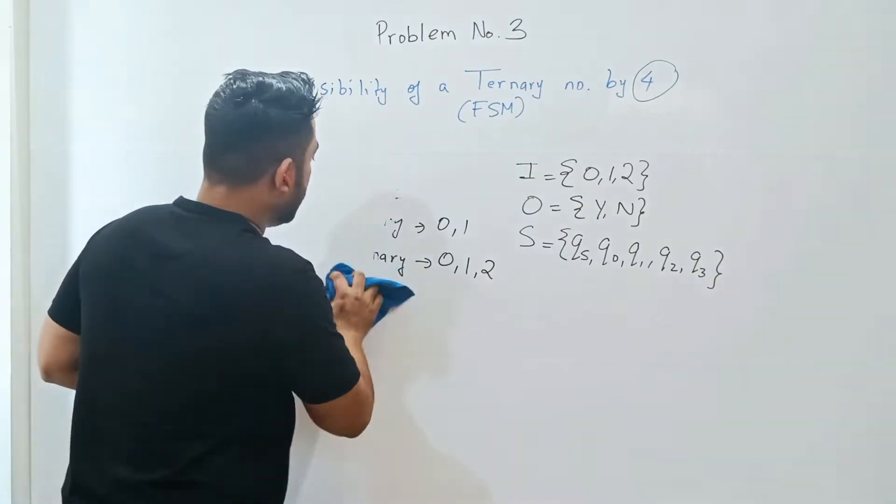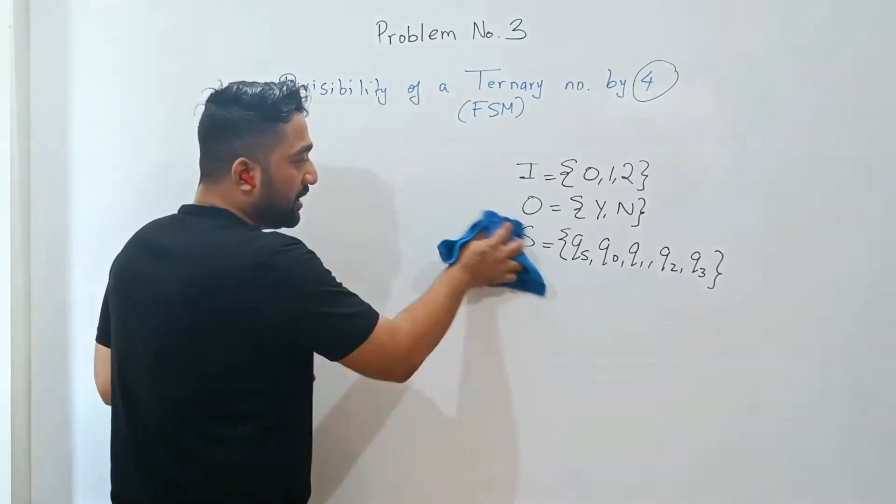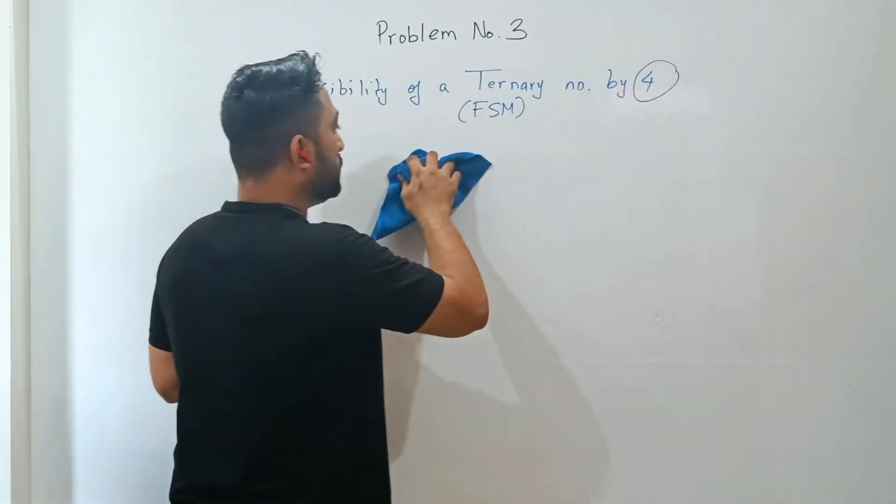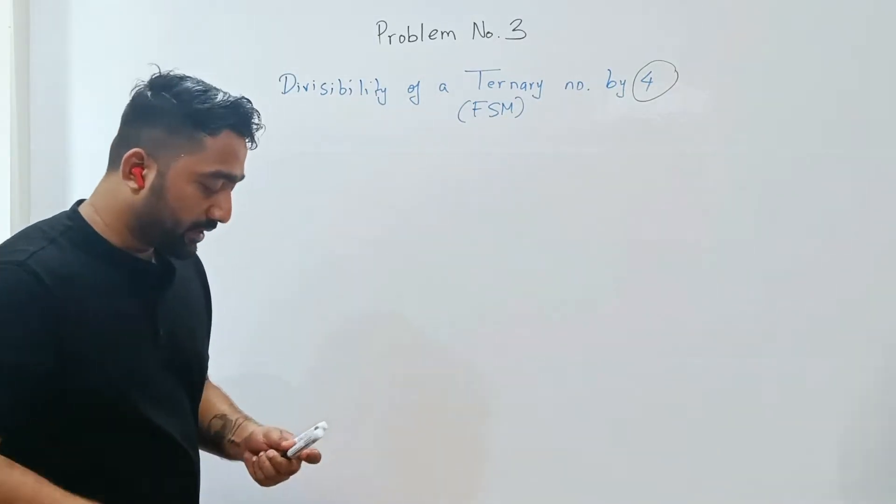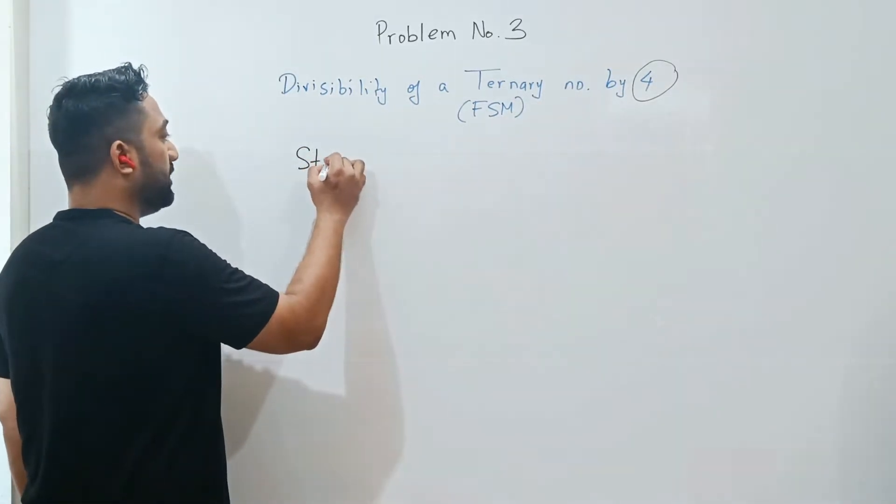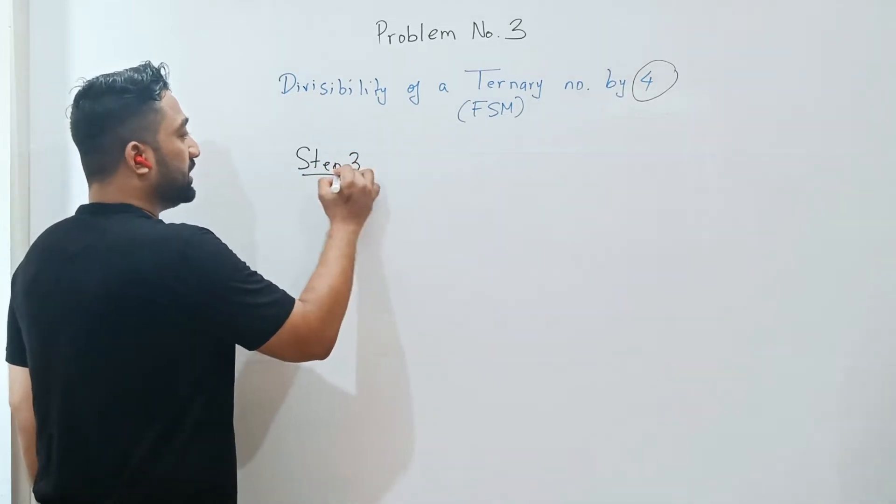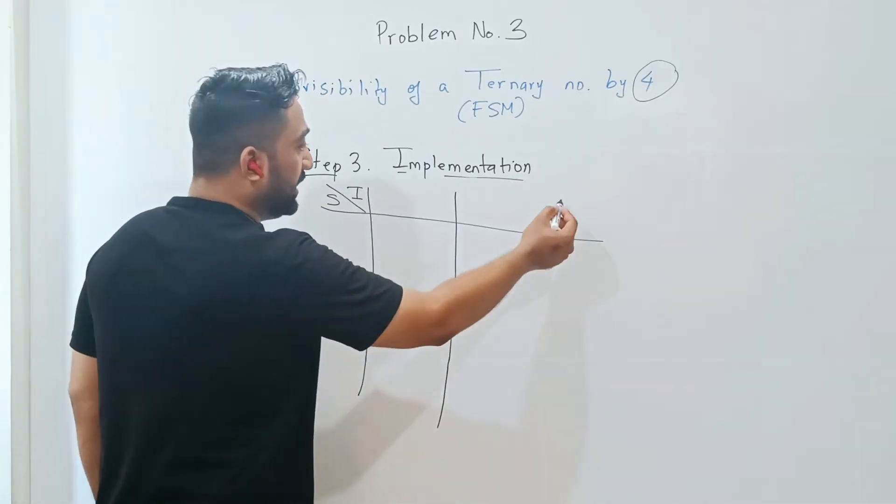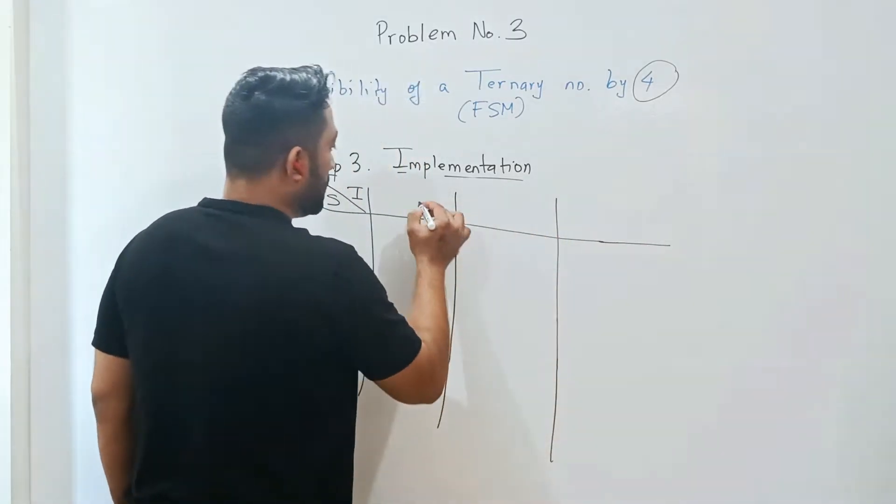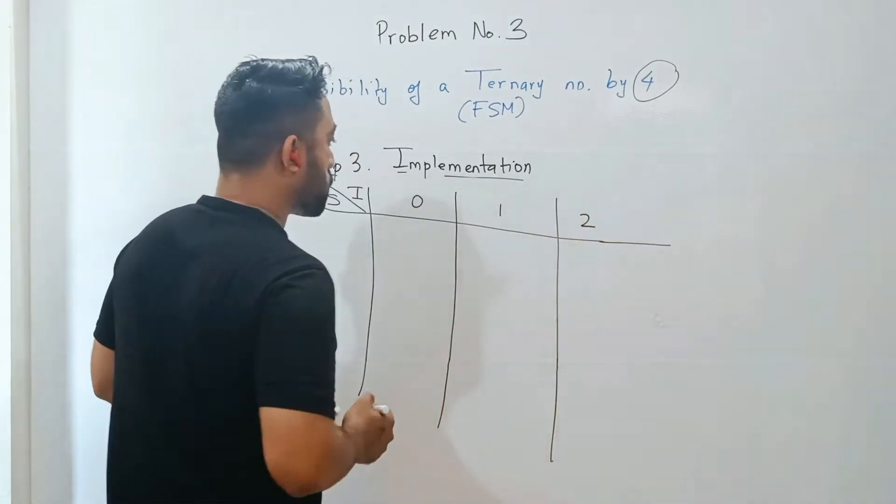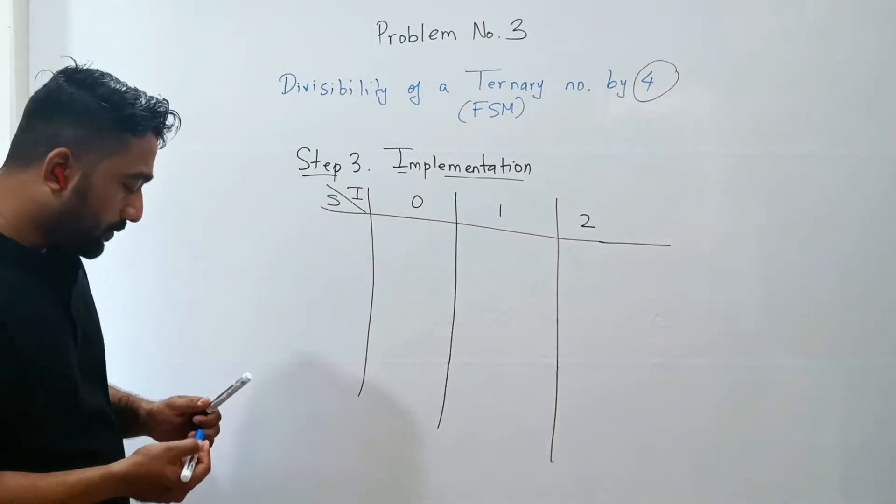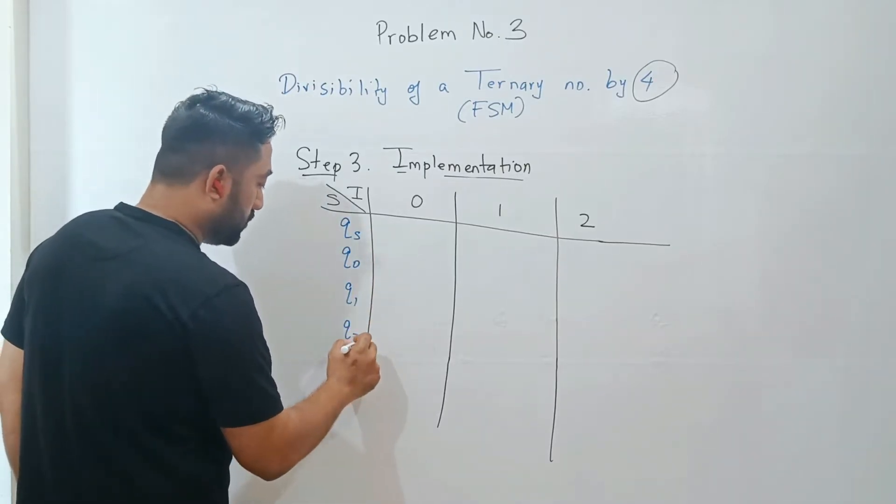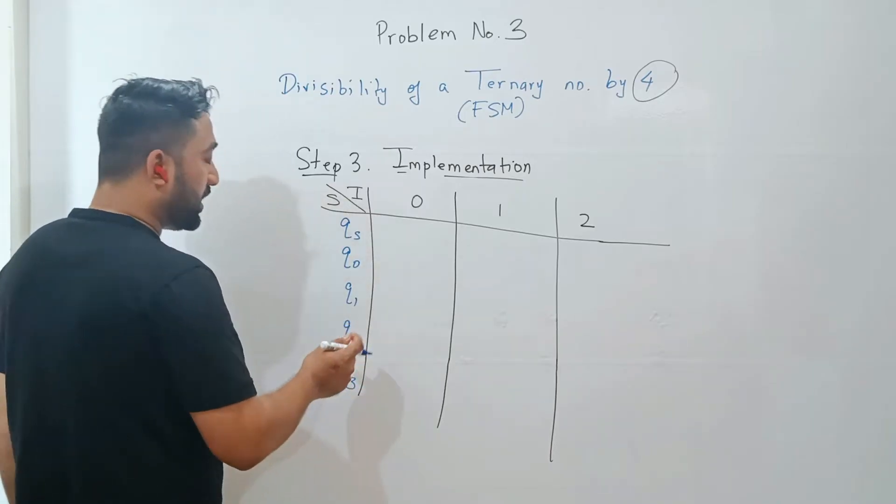So this was your step number 2. Let's start with step number 3, implementation. If you have any doubts, let me know in the comment section. You can go back and rewatch that part of the video. Step number 3 is the implementation. What are the various inputs? Inputs in this case are 3: 0, 1, and 2. States are qs, q0, q1, q2, and q3 because we are dividing by 4.